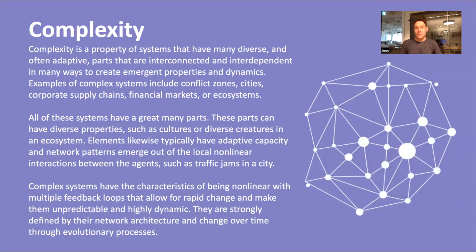Complex systems have the characteristics of being non-linear, with multiple feedback loops that allow for rapid change, making them unpredictable and highly dynamic. We'll talk more about non-linearity in a future card. They're strongly defined by their networked architecture and change over time through evolutionary processes.